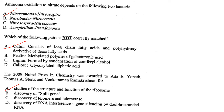Which of the following is not correctly matched? Cutin consists of long chain fatty acids and polyhydroxy derivatives — that is wrong. Pectin is a methylated polymer of galacturonic acid — correct. Lignin is formed by condensation of coniferyl alcohol — correct. Callose is glycosylated aliphatic acid — correct. So the incorrect answer is option A.